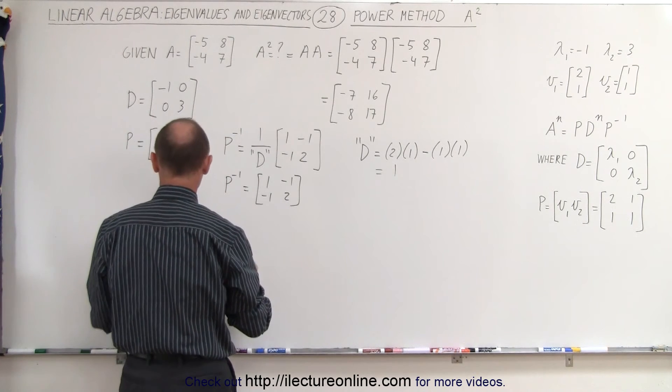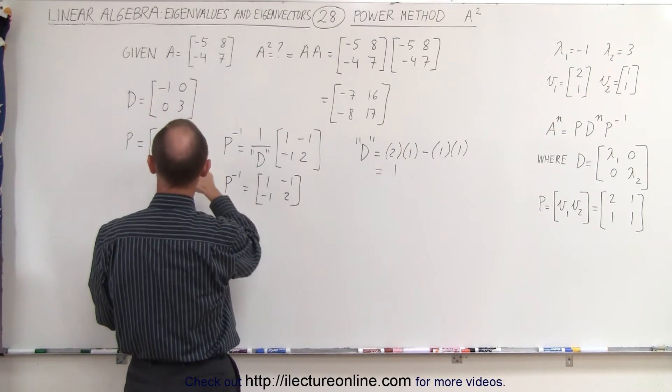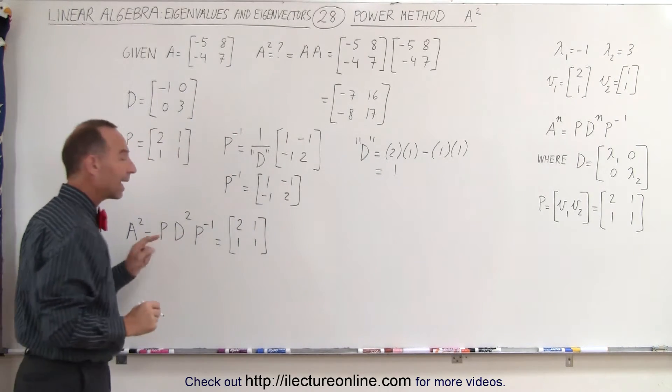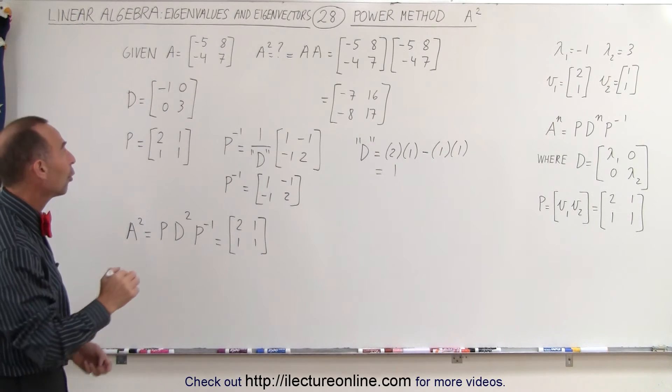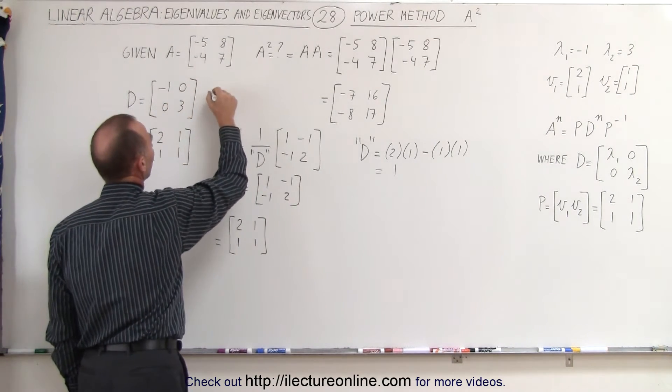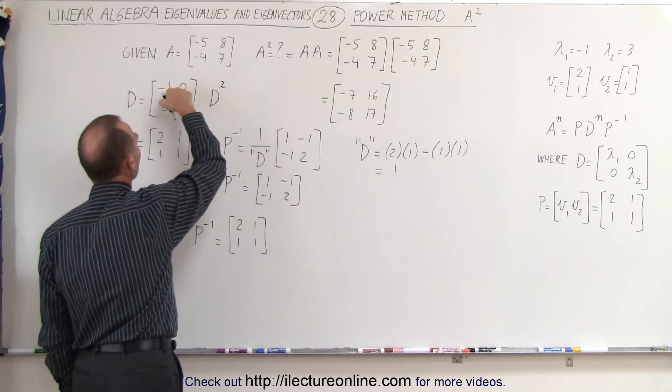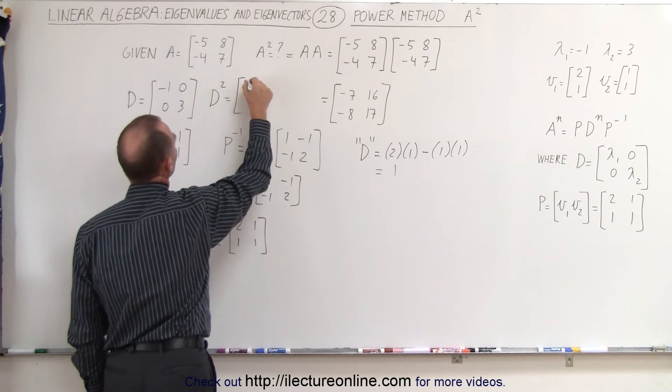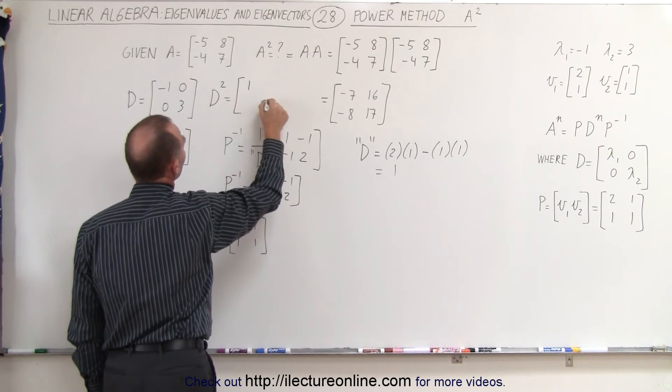So in this case, that's going to be equal to P, which is this matrix right here, 1, 2, 1, 1. Now what about the diagonal matrix squared? Whenever you only have elements along the diagonal, when you then square a matrix like that, you simply have to square the diagonal elements. So in this case, this will be equal to negative 1 squared, which is 1, and 3 squared, which is 9.